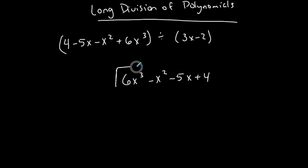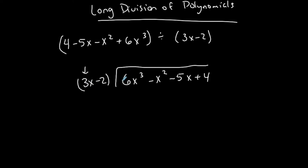If I were missing a term I would have to put a placeholder there — I'll show you what I mean by that. Now this is divided by 3x minus 2. I use 3x to determine what goes into what: 3x into 6x³, or what multiplied by 3x gives me 6x³? If I multiply 3x by 2x², I get 6x³. So 2x² goes on top. Anything on top gets multiplied by the whole expression, distributed to both terms.